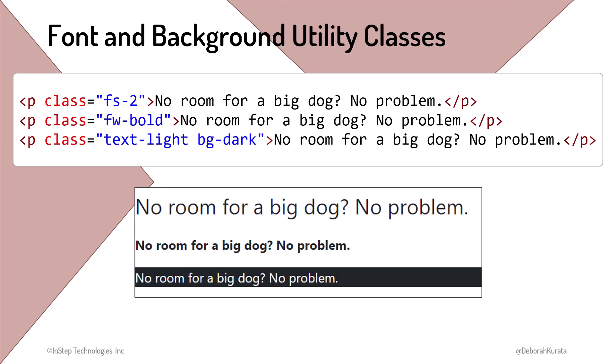Here are some font and background utility classes. Fs and a number sets the font size. The number is similar to the HTML heading element sizes, with one being the largest and six being the smallest. Fw and a value sets the font weight. Values include bold, light, and italic.